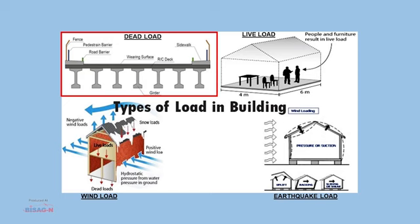The first one is dead load. Dead loads are primarily gravity loads that come in any structure due to structural members such as columns, beams, slab, walls, parapet, and many other members. Dead loads are calculated on the basis of material density and their respective sizes. The IS code which deals with dead load is IS 875 Part 1.